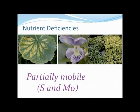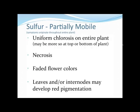That sums up our mobile elements. Moving on to our partially mobile elements, the first is sulfur. You're going to see uniform chlorosis over the entire plant, possibly some necrosis, faded flower colors, and the leaves or internodes might develop some red pigmentation. A lot of people home in on red pigmentation because it's easy to identify, but as I've mentioned, two or three other elements can also develop red pigmentation. For sulfur, we're primarily looking for that uniform chlorosis and faded flower colors.